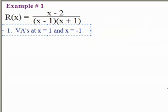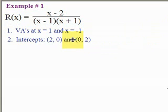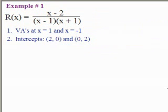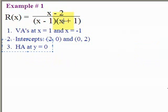The next thing we look at is what creates the intercepts. What makes the numerator zero is two, so the x-intercept is at (2, 0). When I evaluate this function at x equals zero, I also get two, giving me the y-intercept at (0, 2). When x gets big, the degree of the numerator is less than the degree of the denominator, so there will be a horizontal asymptote at y equals zero.